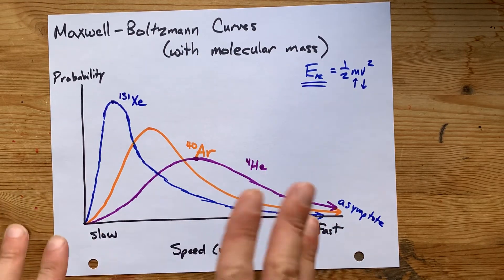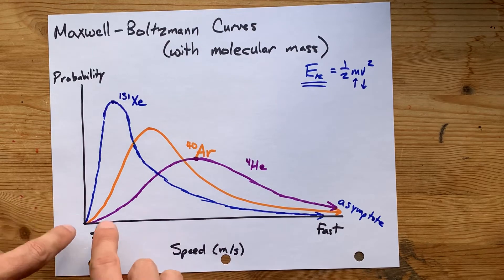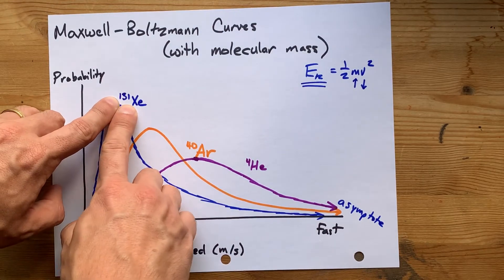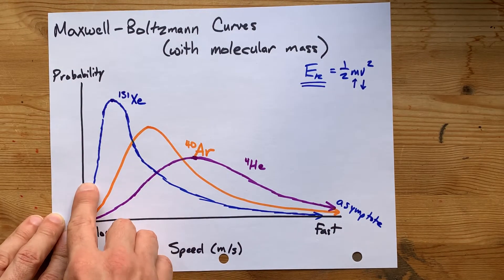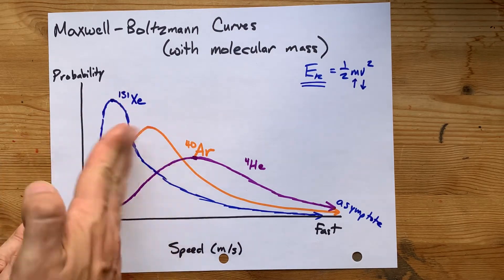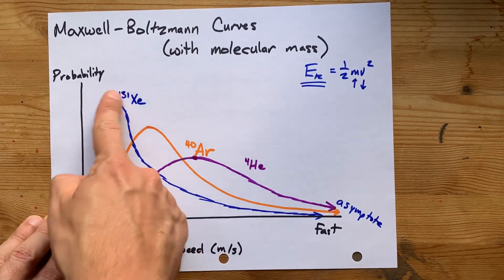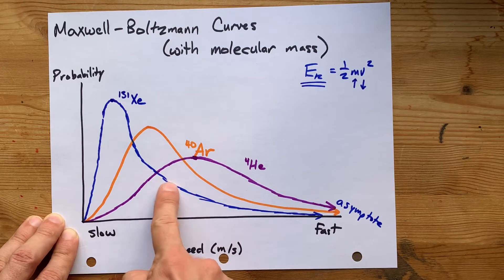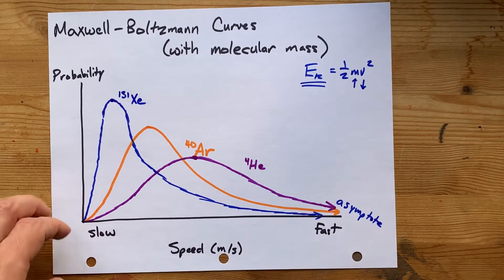The key bits, if you're trying to draw this yourself, are the heavier the particle, I want it to be higher than the other curves on the left of the curve, and I want it to be below the other curves as you approach the horizontal asymptote here.